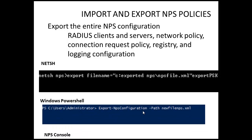You specify the NPS configuration and the path where you want to save the file along with the file name. For example, the file name could be 'newfile.xml'. If we wanted to import, we would use the same command but instead of export we would use import. We can also do it from the NPS console, and we are going to take a look at all three methods right now.